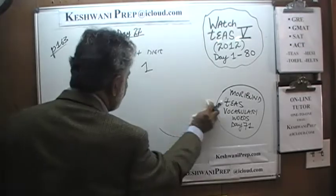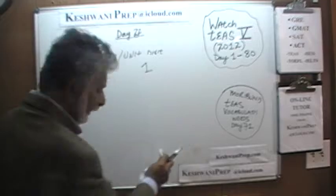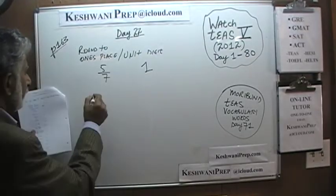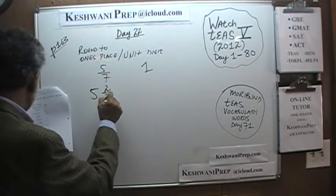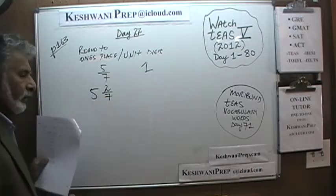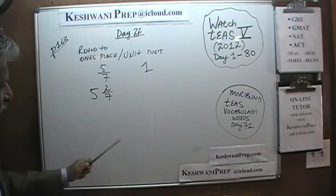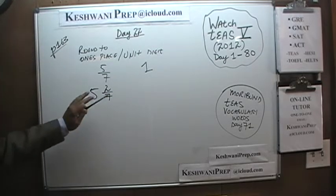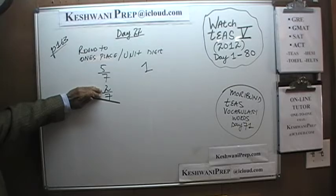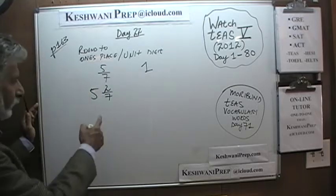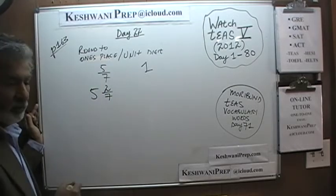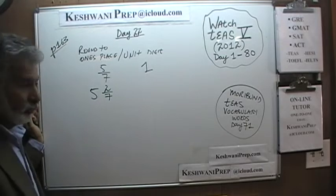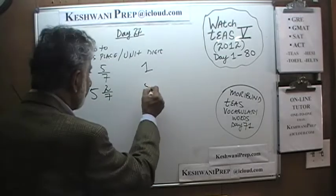The next one will have a mixed number — 5 and 2 sevenths. The fractional part is 2 sevenths, which rounded to the nearest one becomes 0. So 5 and 2 sevenths rounded to the nearest one's simply becomes 5.